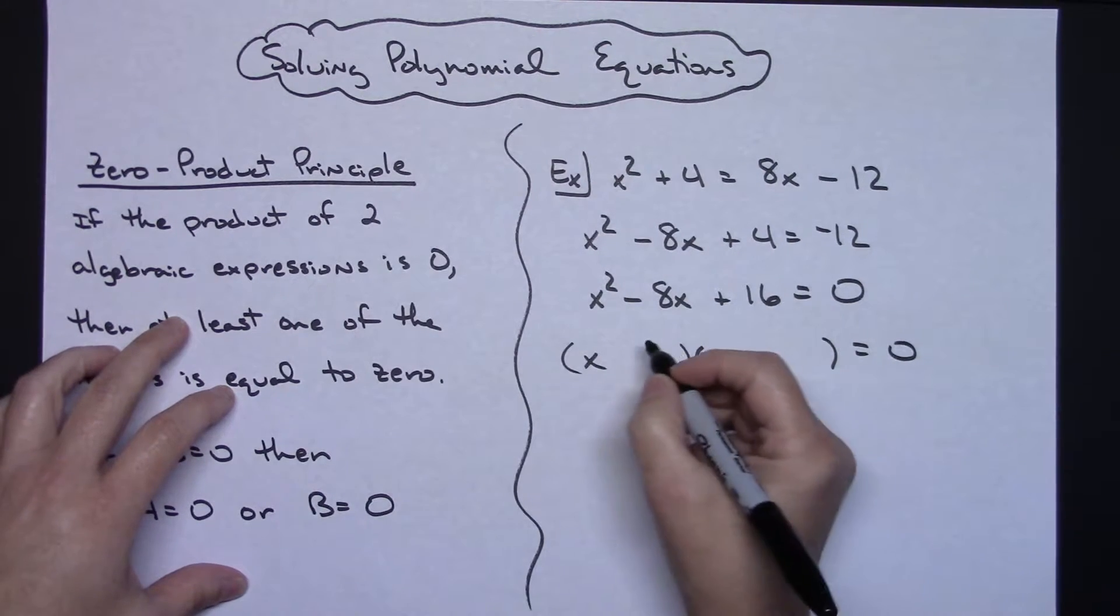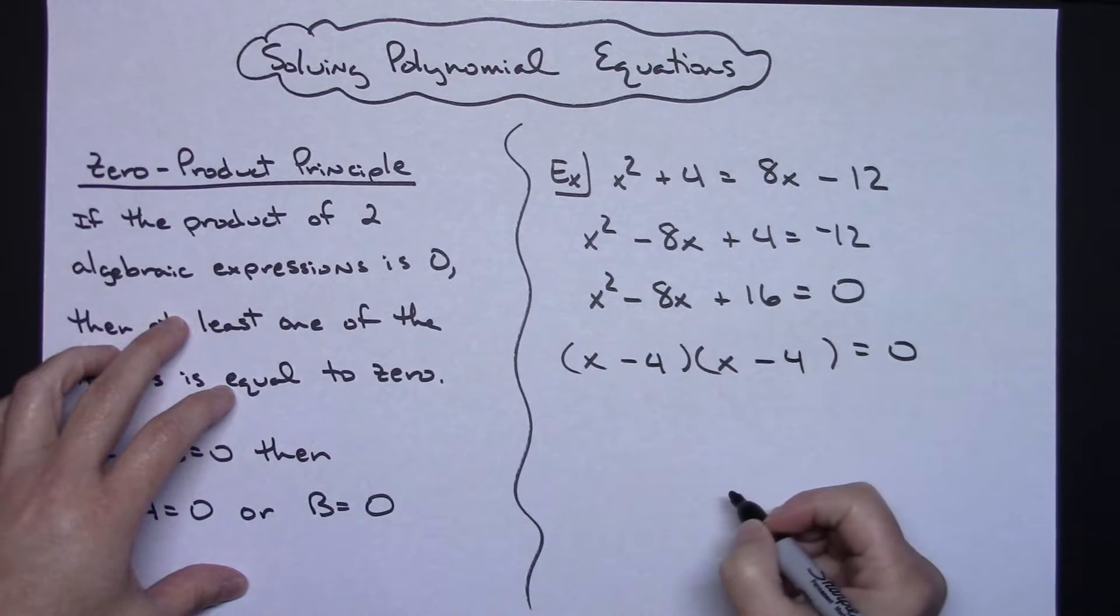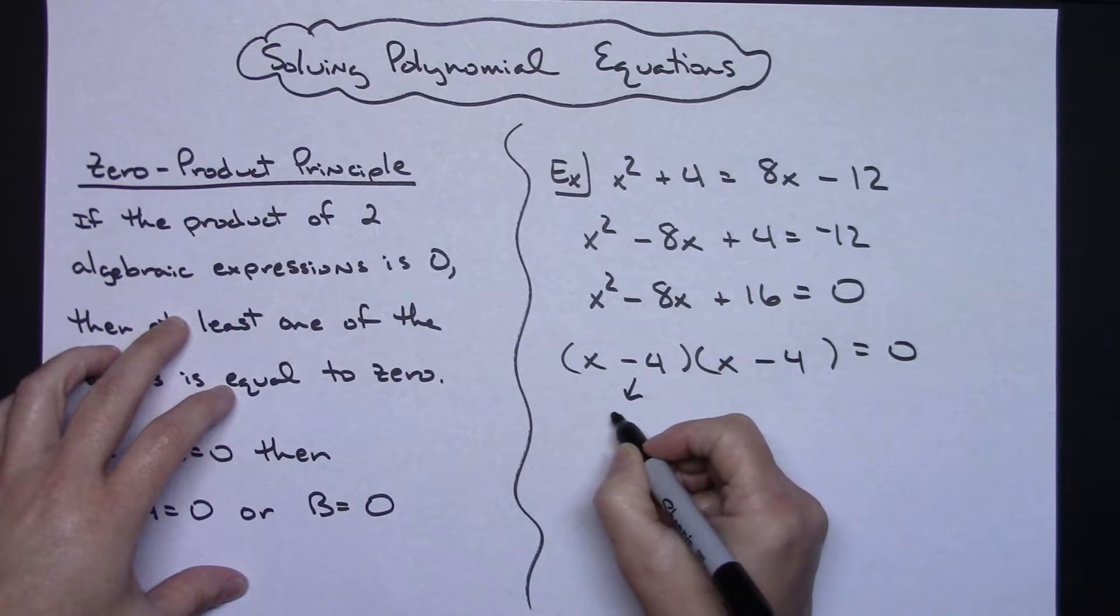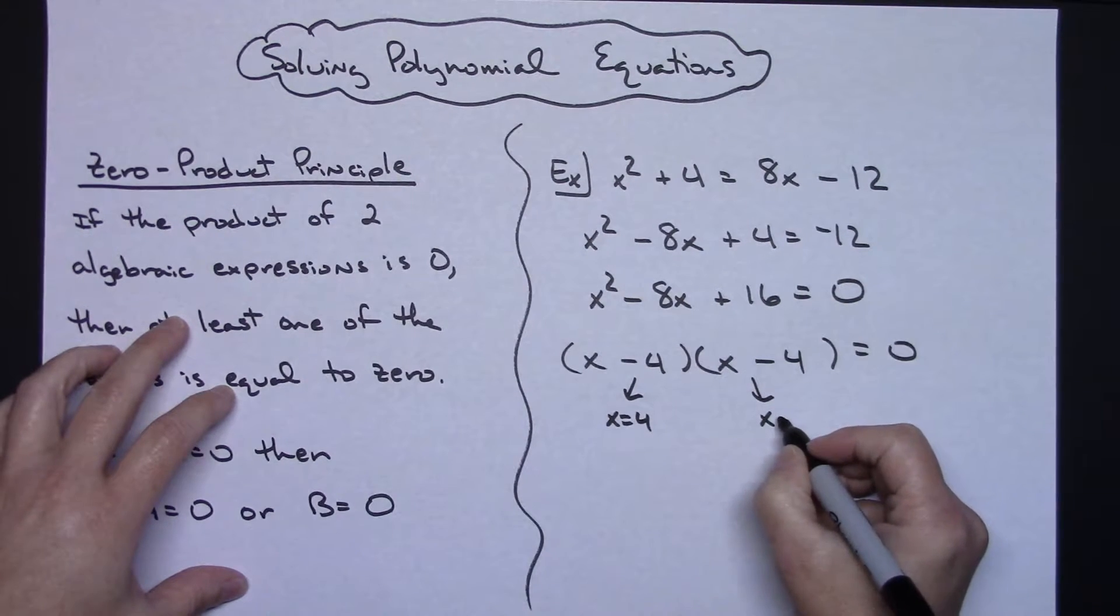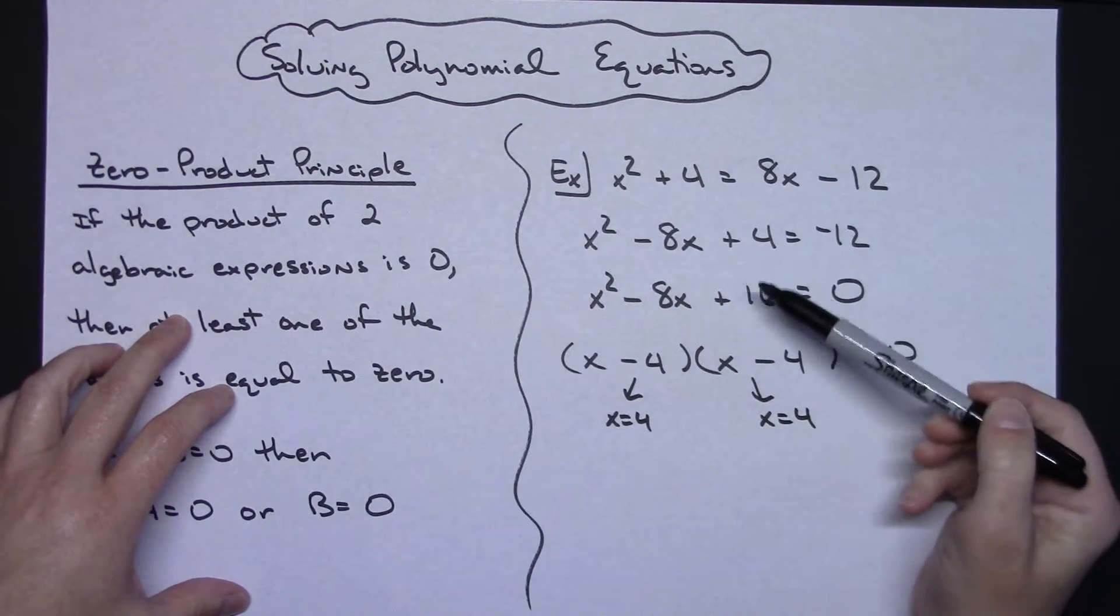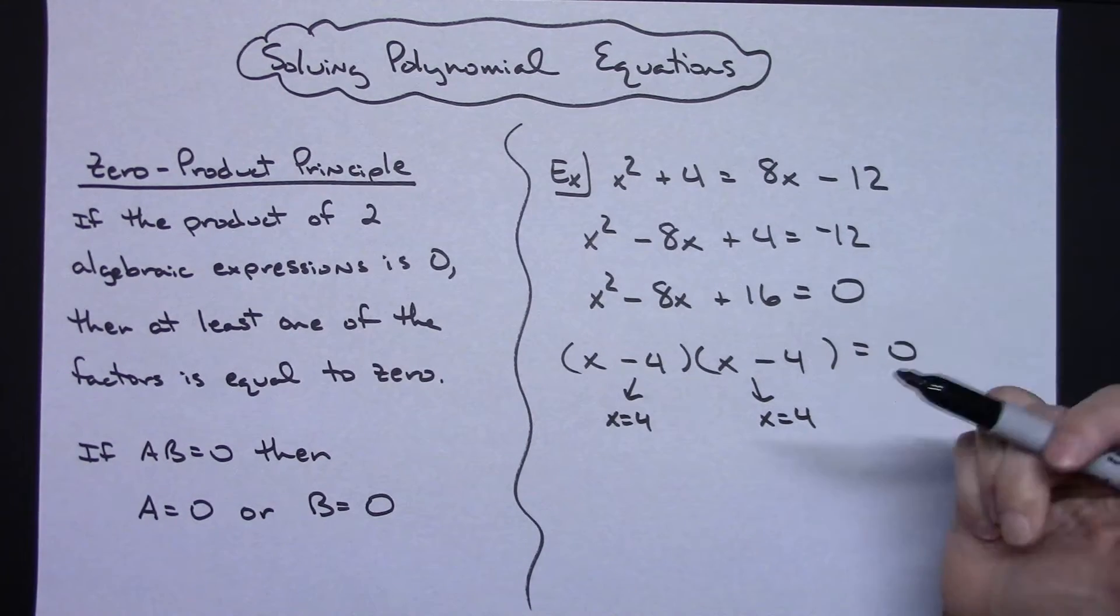It's going to have to be a minus 4 and a minus 4. Then on both of those, x is going to equal 4, because you set each one of them equal to 0. This one gives you x equals 4, this one gives you x equals 4 as well. For some of you that might have noticed, this is a perfect square trinomial, so we could have done it that way as well.